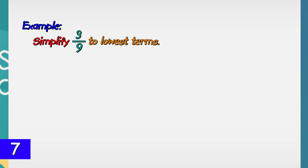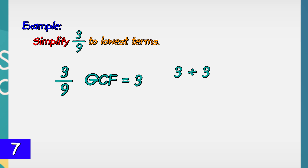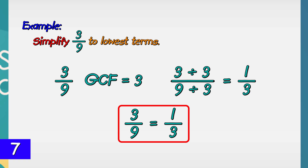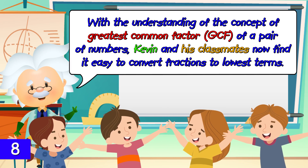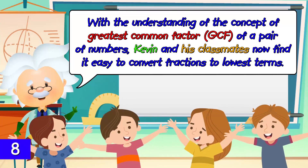Simplify 3/9 to its lowest term. When we list the factors of 3 and 9, we will see the common factors. The greatest common factor of 3 and 9 is 3. Divide the numerator and denominator by 3. The lowest term of 3/9 is 1/3.